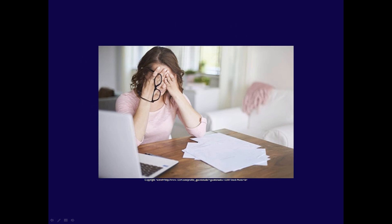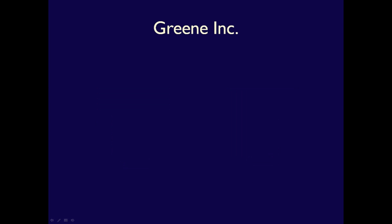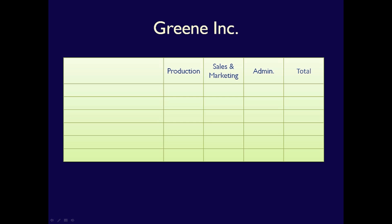Often the whole concept of by nature versus by function confuses students, so let's do an example to clarify. Assume you work for Green Inc. The business has three departments: Production, Sales and Marketing, and Administration. Each of these departments have the following costs.